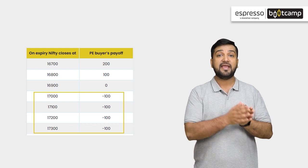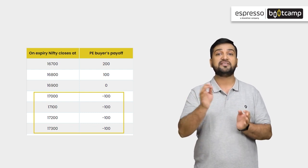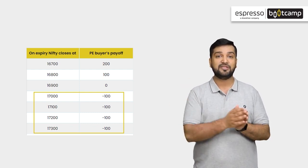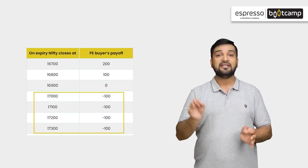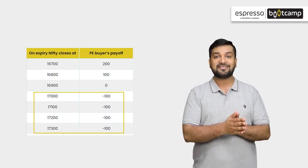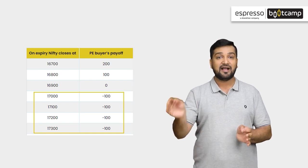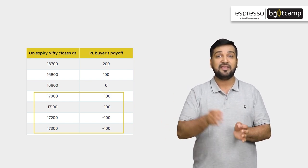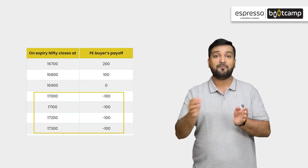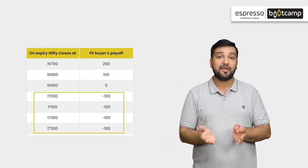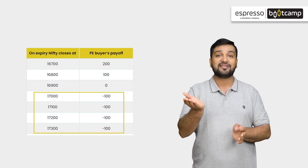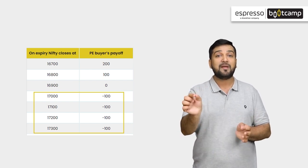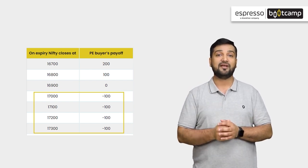Put buyer ka P&L aur achse se samajne ke liye, aap is table ko dhek sakte ho. Jiasse ki aap dhek sakte hain, agar at the time of expiry, nifty break even point ke oopar close karta hai, toh yhe trader pura premium lose karega.